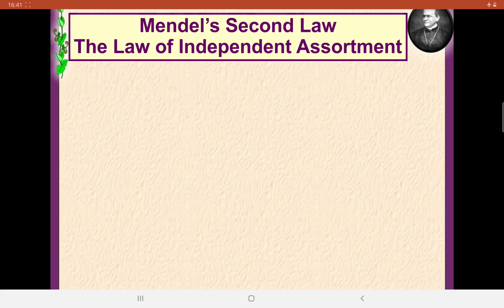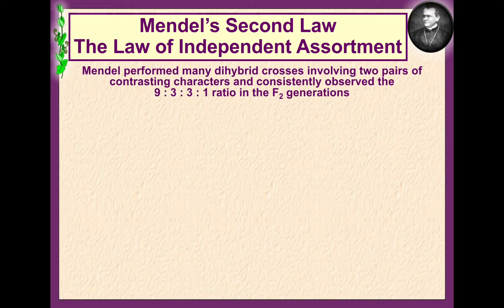That was Mendel's law. The modern explanation is that alleles controlling two traits found in different chromosomes can come together independently or be separated independently.